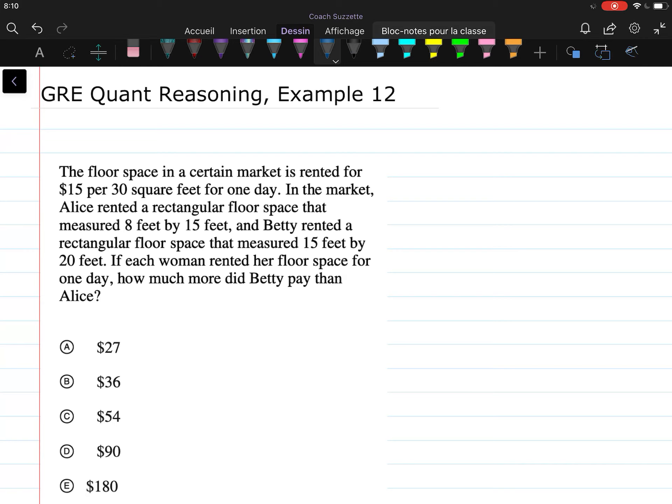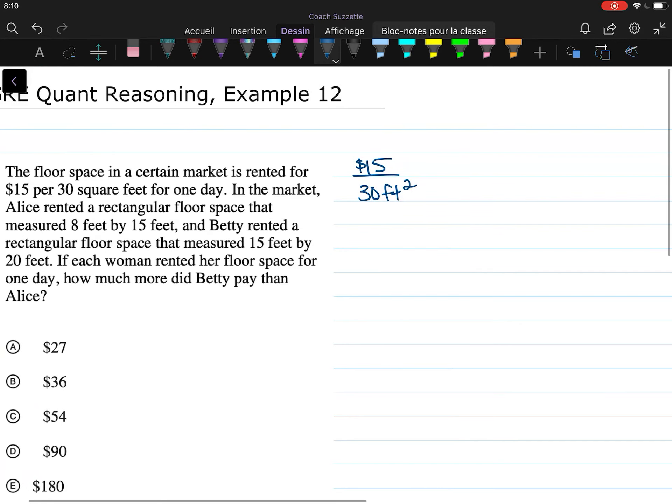So let's figure out how much each of them paid. If we know this is the going rate, $15 per 30 square feet, let's figure out how many units of 30 square feet each purchased.